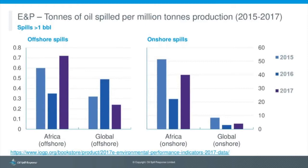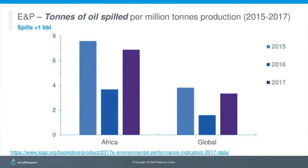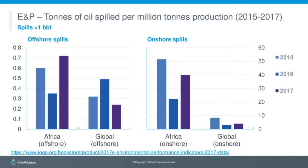Splitting the data between onshore and offshore spills — looking only at spills greater than one barrel — offshore spills in Africa are slightly higher than the global rate but still below one ton lost per million tons of production. This shows that overall, offshore exploration and production sees a much reduced rate of loss compared to onshore operations.